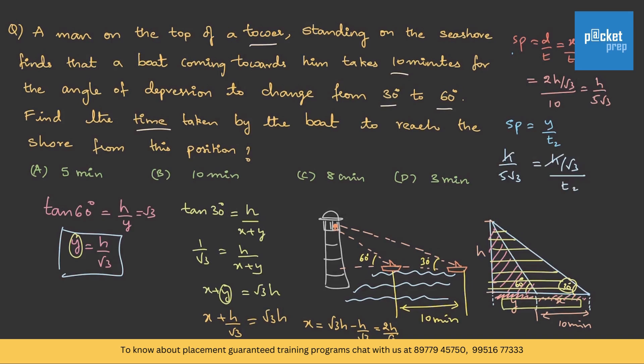h can be cancelled. t2 is 5 root 3 by root 3, that is 5 minutes. Therefore, the answer is option A. That is it for the topic heights and distances.